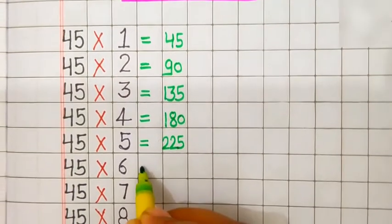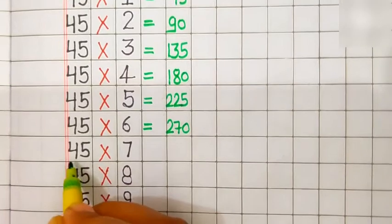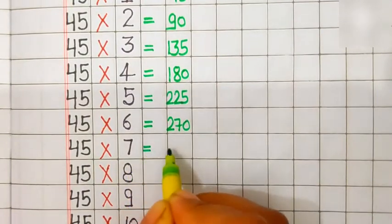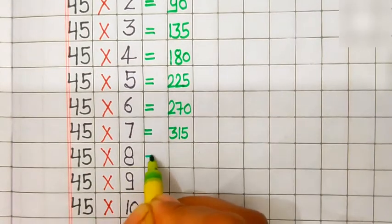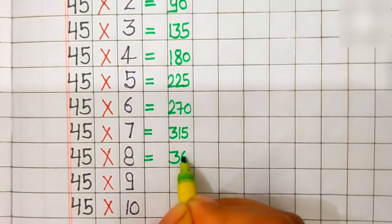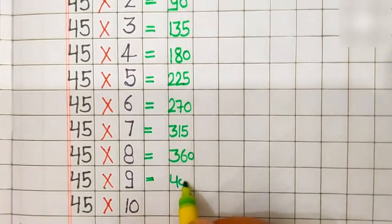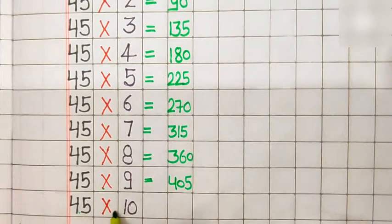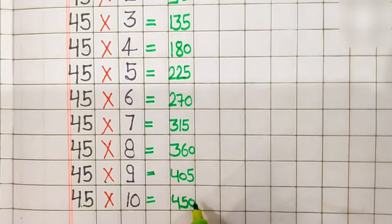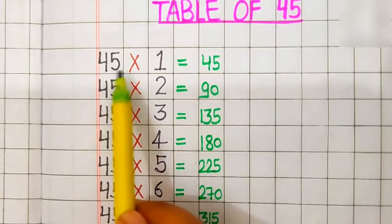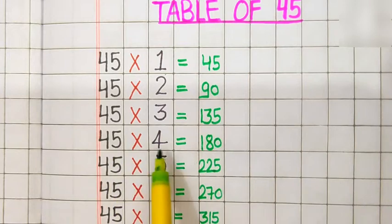45 sixes are 270. 45 sevens are 315. 45 eights are 360. 45 nines are 405. 45 tens are 450. Table repeat: 45 ones are 45. 45 twos are 90. 45 threes are 135. 45 fours are 180.